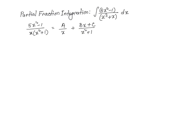To simplify this, I'm going to multiply both sides of this equation by the denominator on the left, which is x times x squared plus 1. By multiplying both sides by that, I get the following.